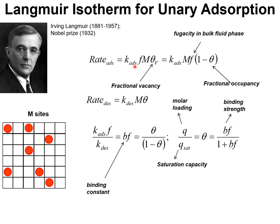The fractional vacancy may be written as 1 minus theta, where theta is the fractional occupancy. The occupied sites are indicated by the red circles shown here, and the vacant sites are available for adsorption. The rate of desorption is proportional to the number of occupied sites, which is m times theta, the fractional occupancy, and k_des is the reaction rate constant for the desorption process.